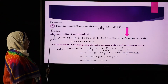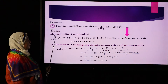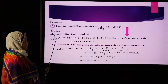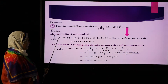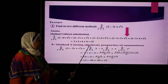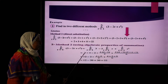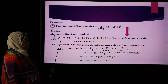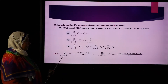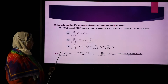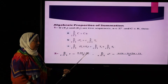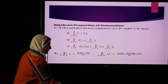For example: summation notation from r=1 to 4 of (3 - 2r + r²). The first term is the constant 3. Therefore, summation notation from r=1 to 4 of 3 equals 3×4=12. For the second term, we know that summation notation from r=1 to n of r equals n(n+1)/2.